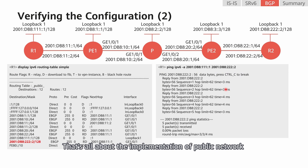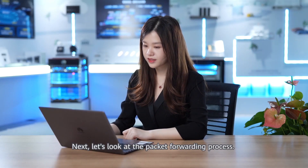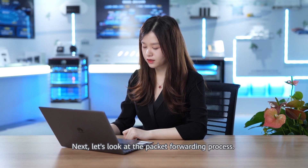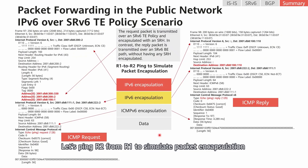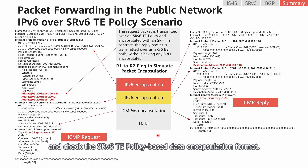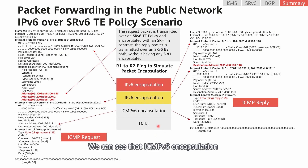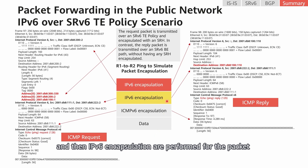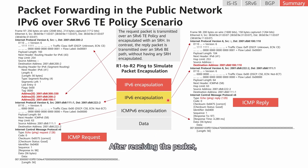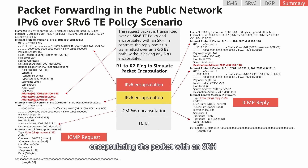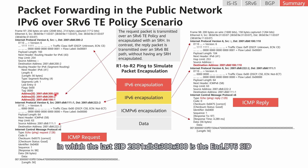That's all about the implementation of public network IPv6 over SRv6 TE policy in the control plane. Next, let's look at the packet forwarding process. Let's ping R2 from R1 to simulate packet encapsulation and check the SRv6 TE policy-based data encapsulation format. We can see that ICMPv6 encapsulation and then IPv6 encapsulation are performed for the packet sent from R1 in the SRv6 TE policy scenario. After receiving the packet, P1 performs SRv6 encapsulation, encapsulating the packet with an SRH in which the last SID is the end.dt6 SID of the public network instance configured on the peer PE.